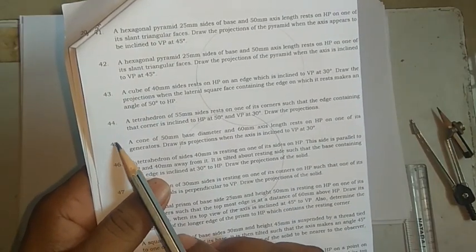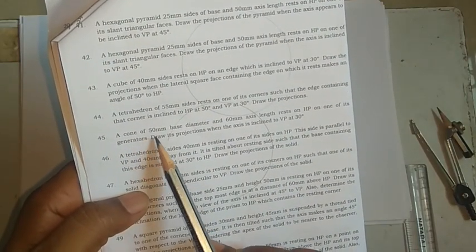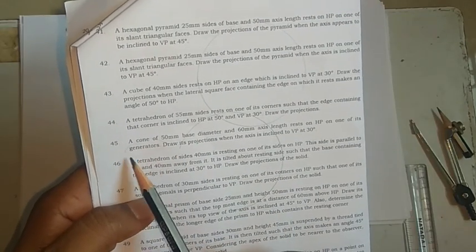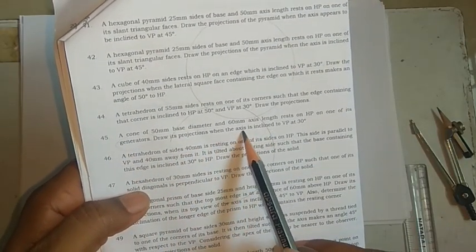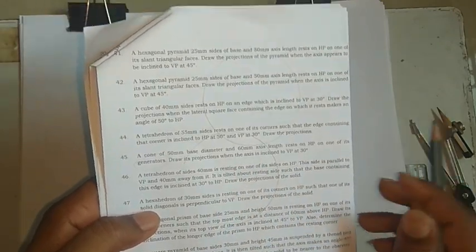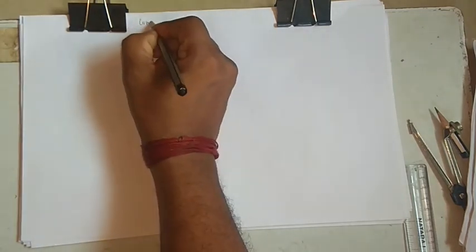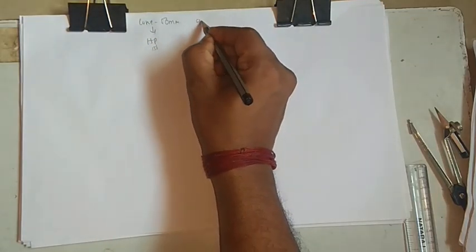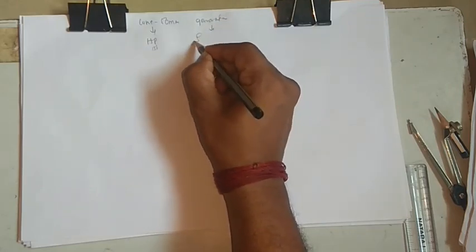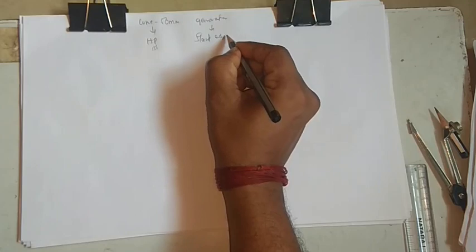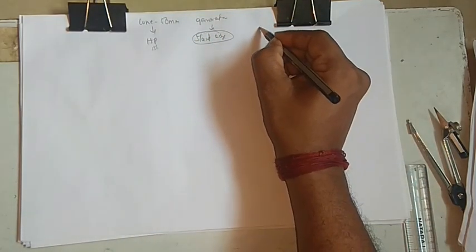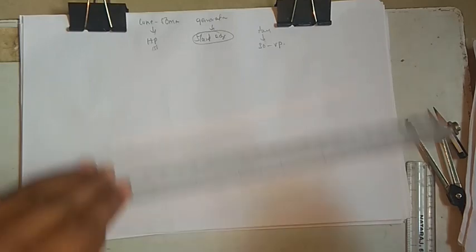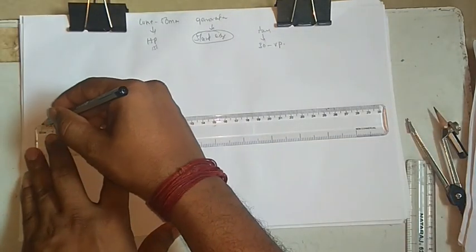Hello friends, here we go with problem number 45, where a cone of 50mm base diameter and 60mm axis length rests on HP on one of its generators. It's a locus-length problem. The axis is inclined at 30 degrees to the VP.